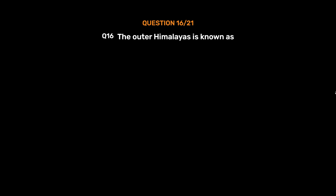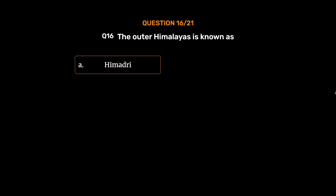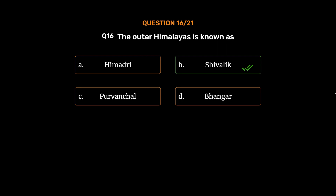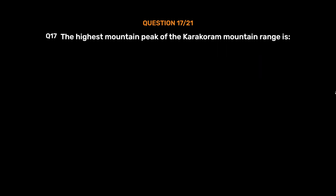Question number 16: The outer Himalayas is known as — Option A: Himadri. Option B: Shivalik. Option C: Purvanchal. Option D: Bhangar. The correct answer is Option B, Shivalik.